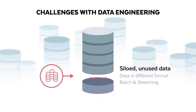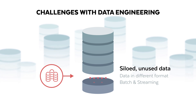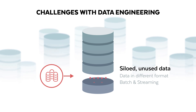First of all, data of every shape and size is being generated at different speeds. With a legacy architecture, data often lands in different databases, data lakes, and even data marts, as well as in the cloud and on-premises.